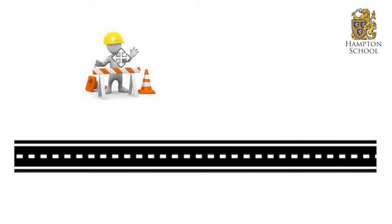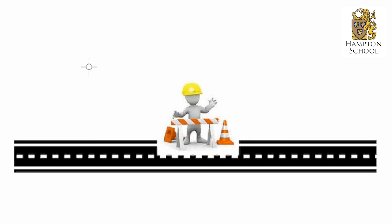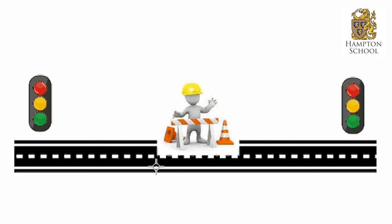Imagine that there's a road and they've got some roadworks being carried out that's blocking one of the lanes. You need to design a system of traffic lights for the traffic at each end of the roadworks to make sure that they can navigate through the one lane safely without crashing into each other.